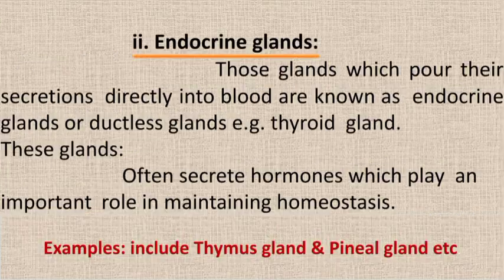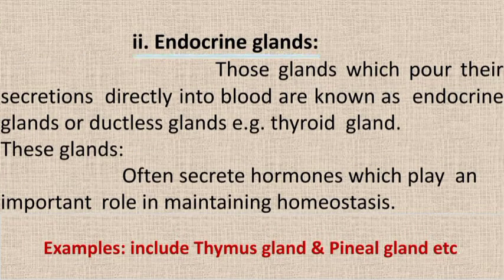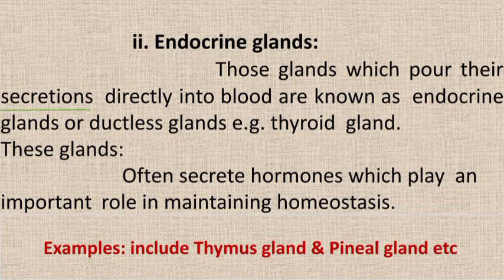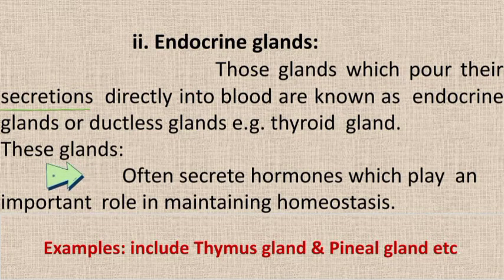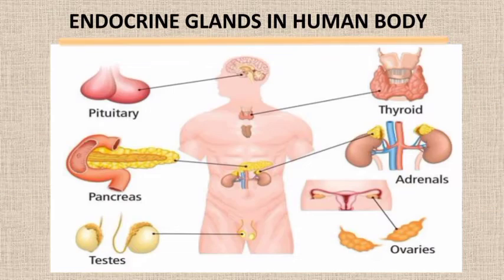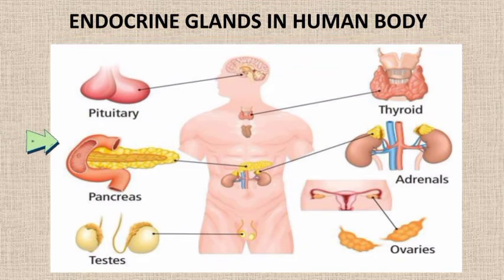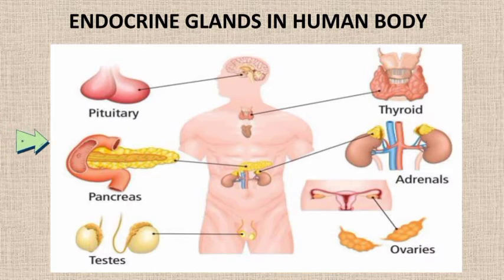Endocrine glands pour their secretions directly into the blood because they are ductless — for example, the thyroid gland. Endocrine glands usually maintain homeostasis in the animal body. Some endocrine glands in the human body include the pituitary gland, thyroid gland, pancreas, testes, adrenals, and ovaries.